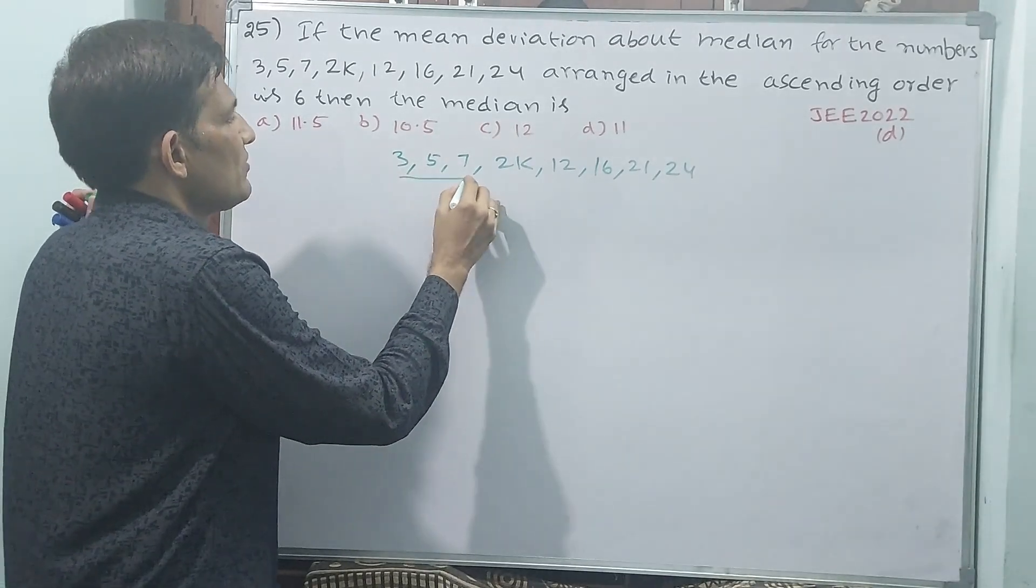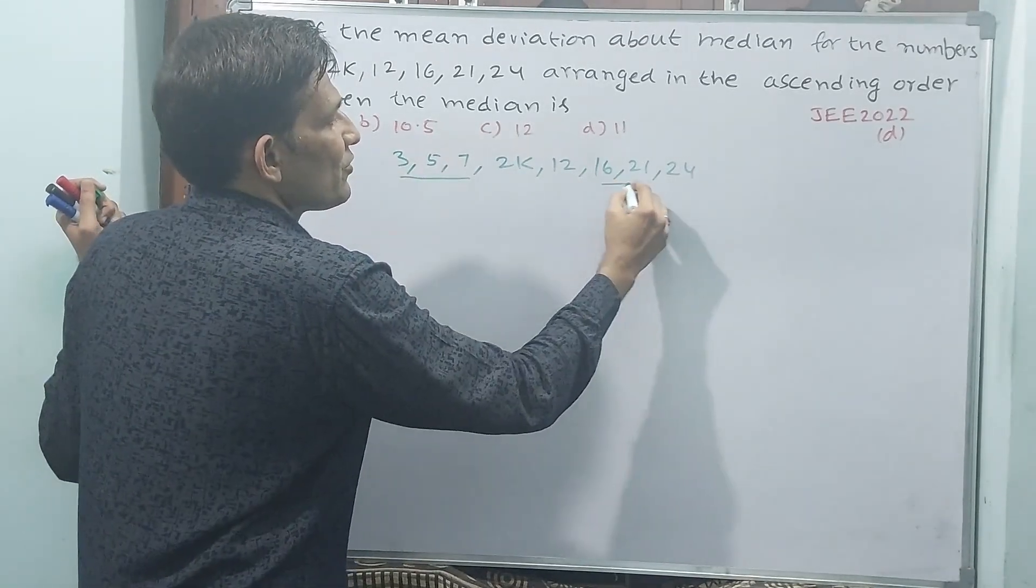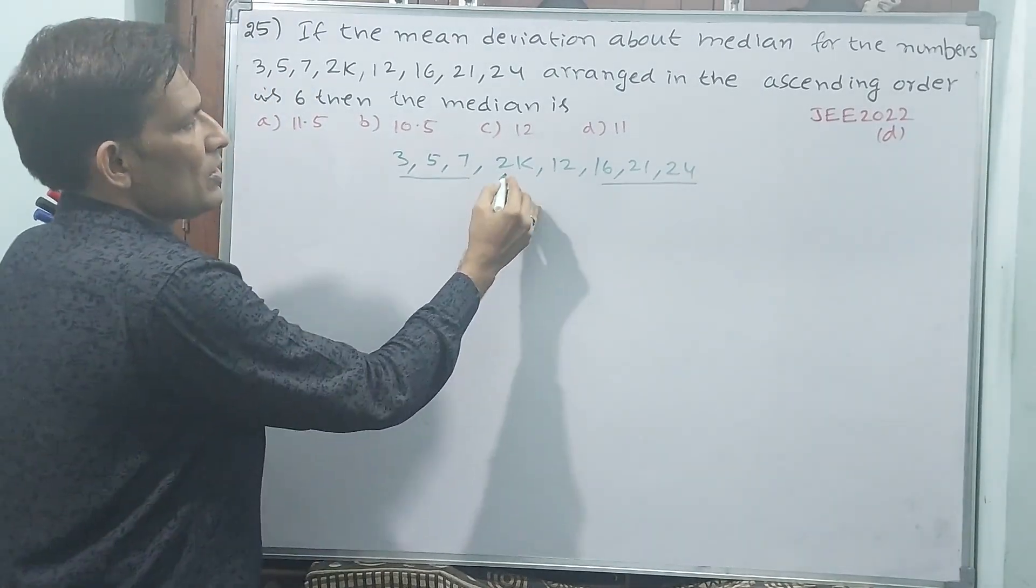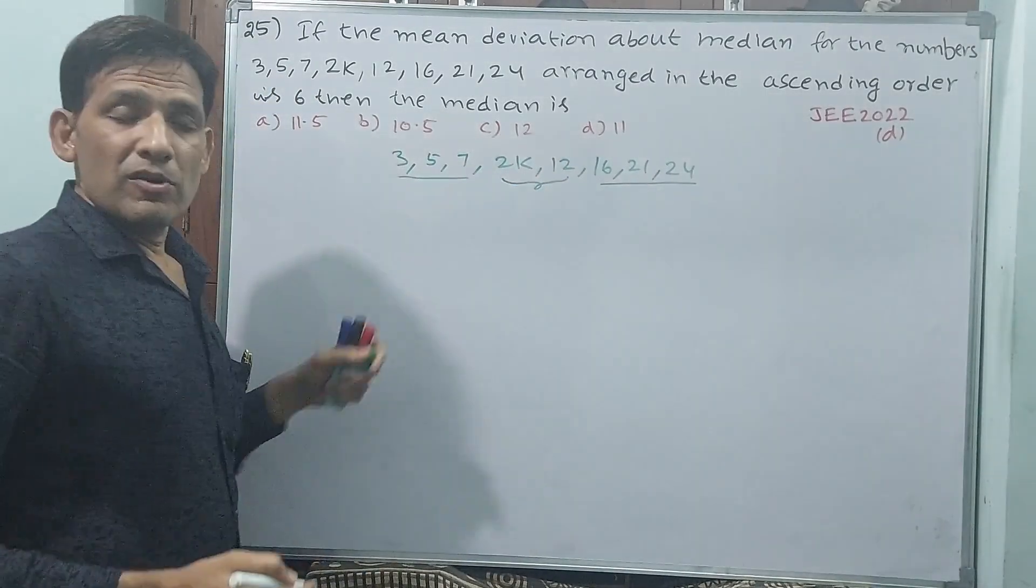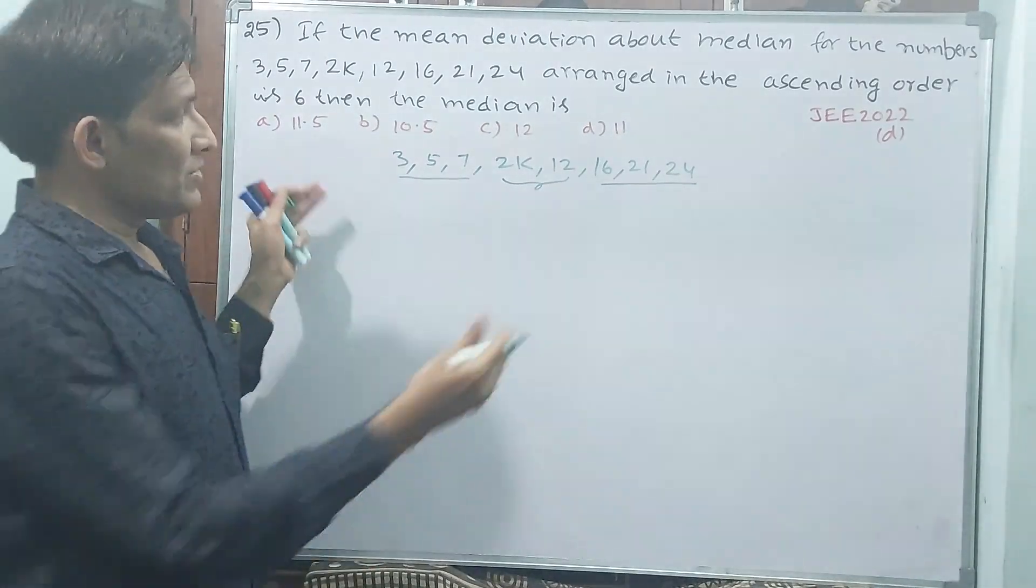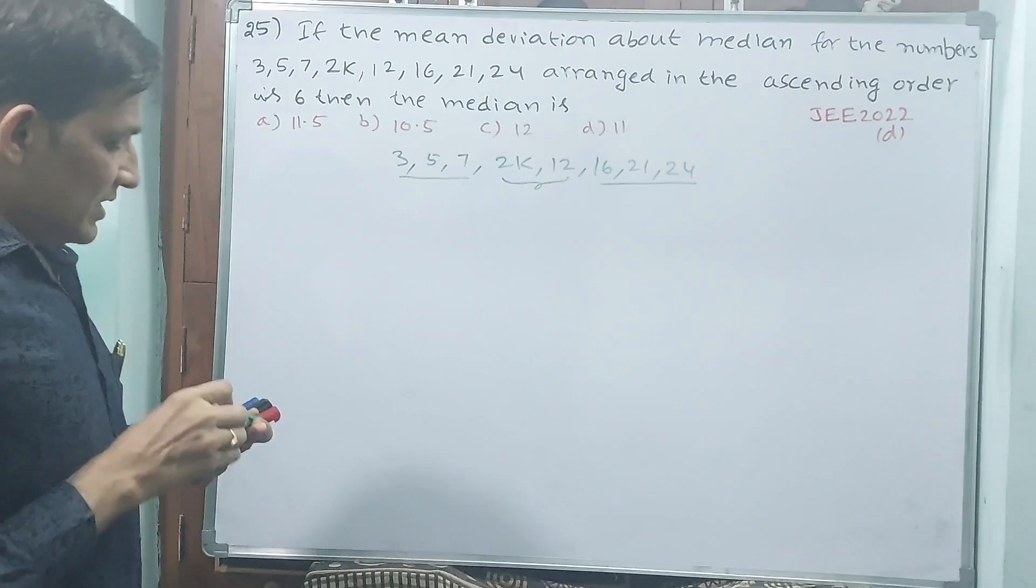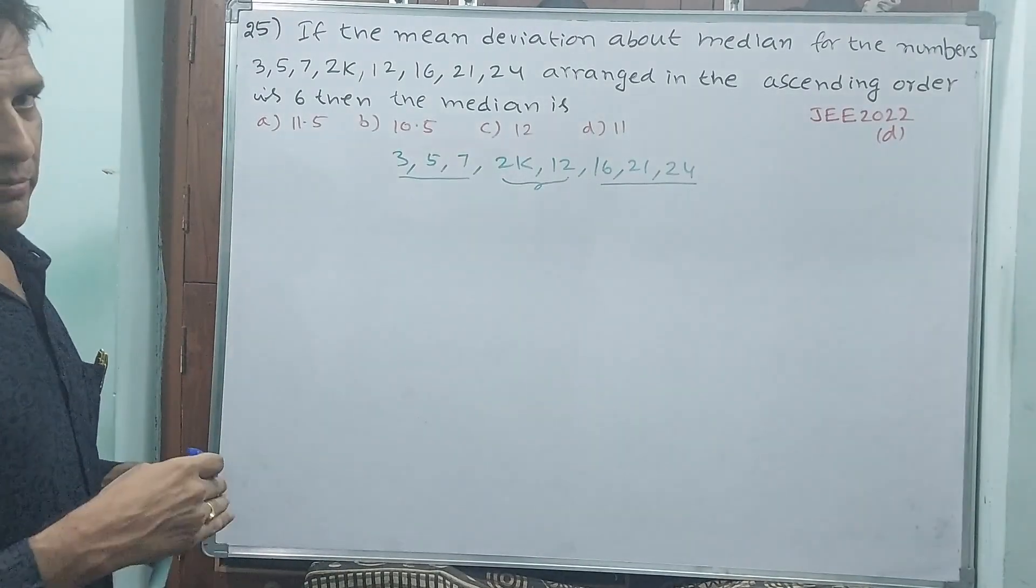3, 5, 7 this side, 16, 21, 24 this side, if you remove, 2K, 12 will be your center numbers. If it is an odd number, then center only one will be there, that will be your median. See, how to solve this shortcut method I want to tell.